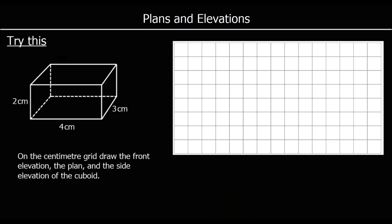One for you to try. We've got a cuboid and we're asked for the front elevation, the plan and the side elevation of this shape. The plan is the view from the top looking down. From the top it will be a rectangle, 4 centimetres by 3 centimetres. So 4 centimetres by 3 centimetres — that is the plan.